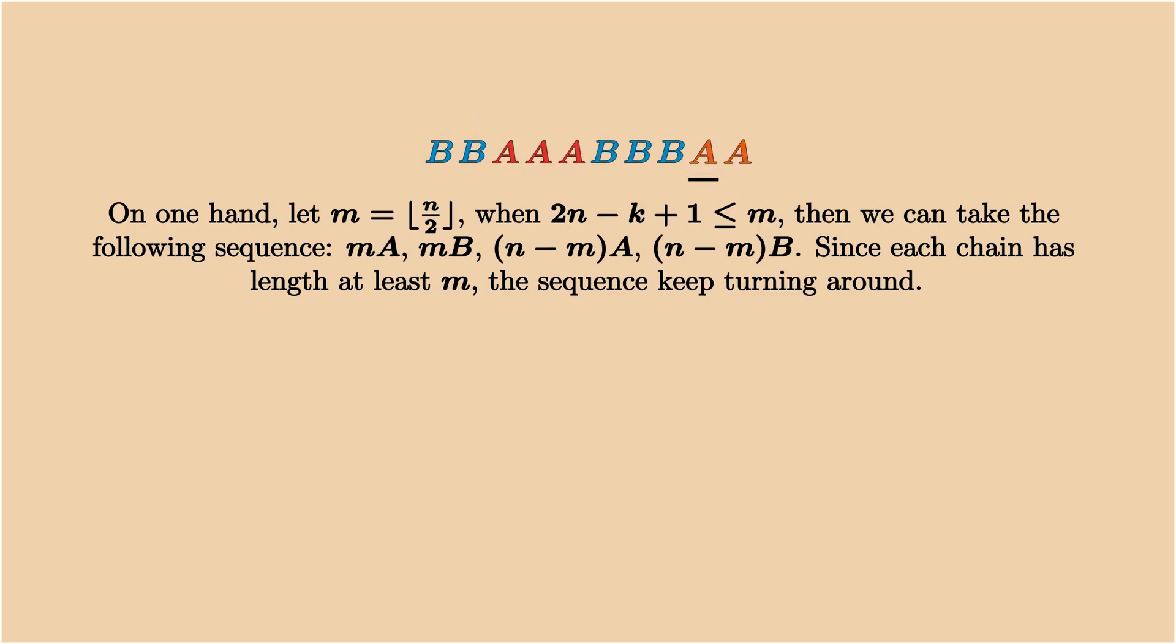By construction, we ensure that each chain has length at least m, which is larger than 2n-k+1. So the sequence will keep turning around and the process fails.